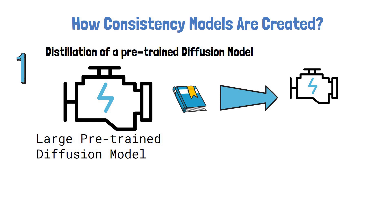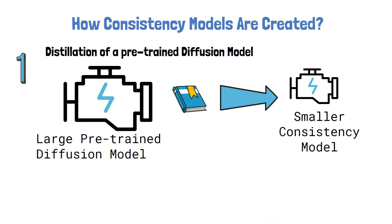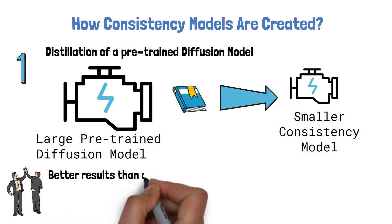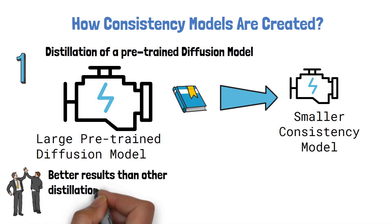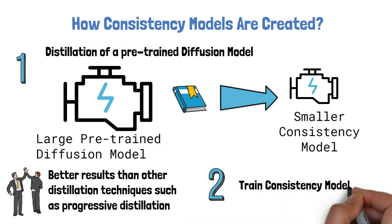In general, distillation means transferring knowledge from a large model to a new, lighter model. Using this approach, the researchers were able to get better results than other distillation techniques which were applied to diffusion models, such as progressive distillation. We will keep progressive distillation for another video. The second method is to train consistency models from scratch, which also produced good results.